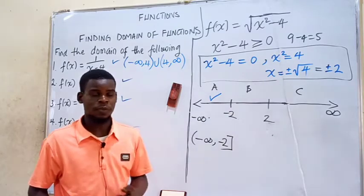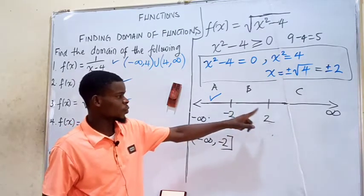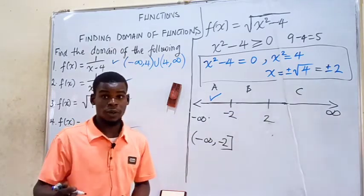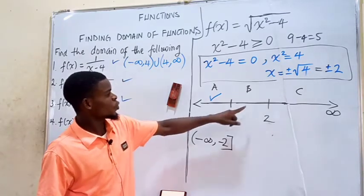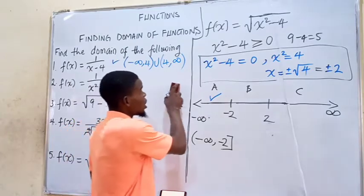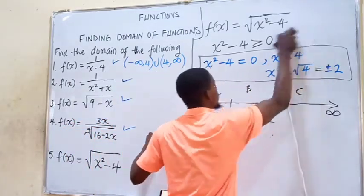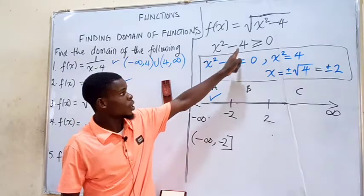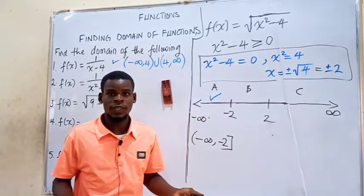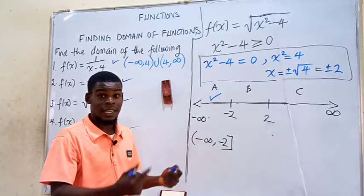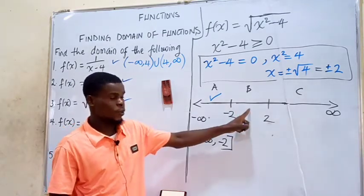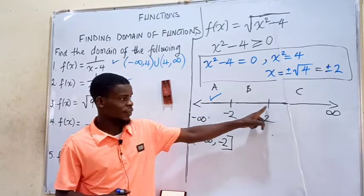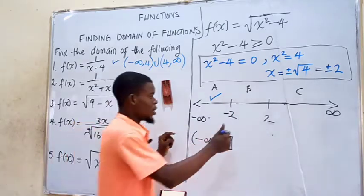Next we look at interval B, from negative 2 to positive 2. Between negative 2 and positive 2 we can pick 0. Substituting x = 0 into the inequality: 0 squared minus 4 equals negative 4. Is negative 4 greater than or equal to 0? No — negative 4 is less than 0. Therefore x = 0 did not satisfy the inequality, which means the entire interval B does not satisfy it. So B is rejected.